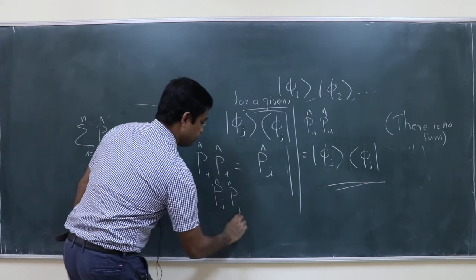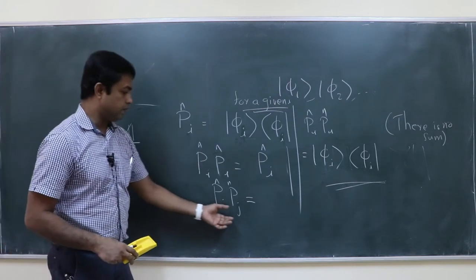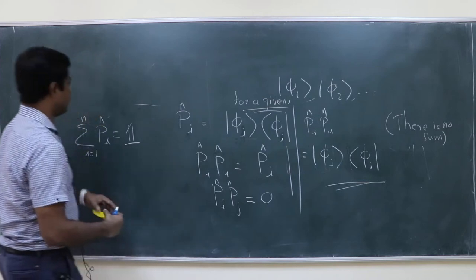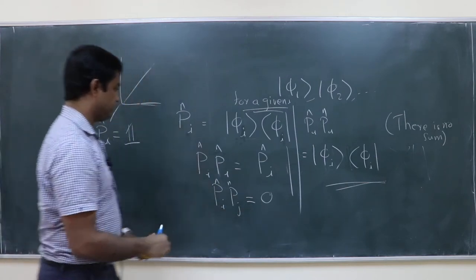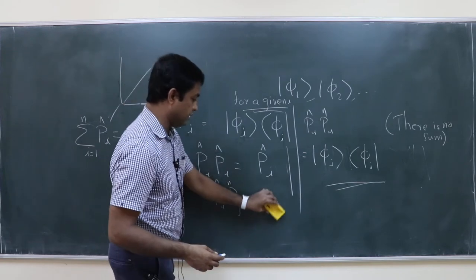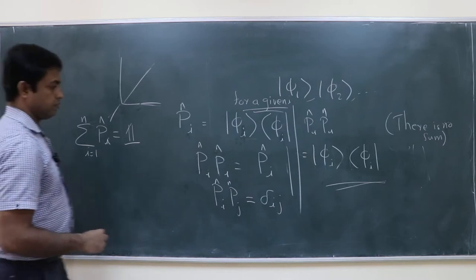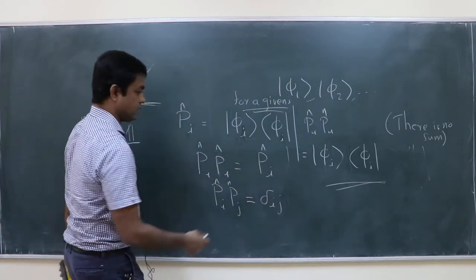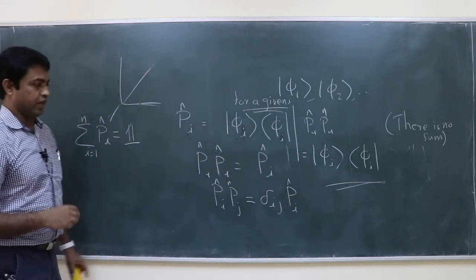When i and j are different, Pi Pj equals zero — if you take a component along one direction and then find a component along a different orthogonal direction, you get nothing. So Pi Pj = δij Pj: when i equals j you get Pi, and when i is not equal to j you get zero.